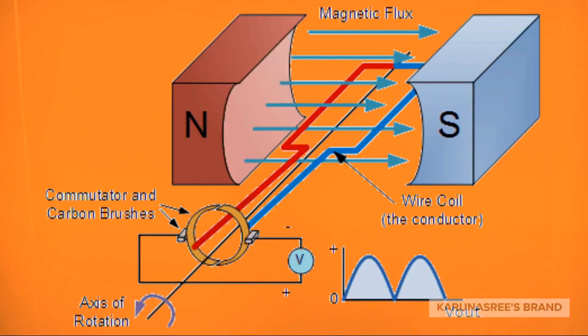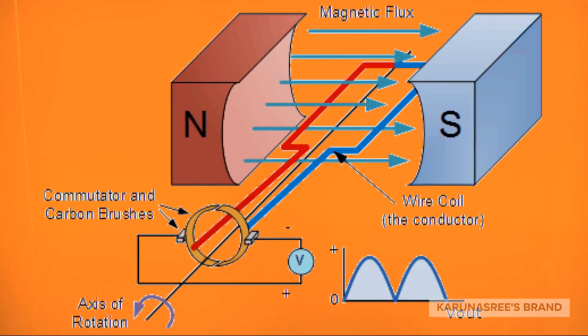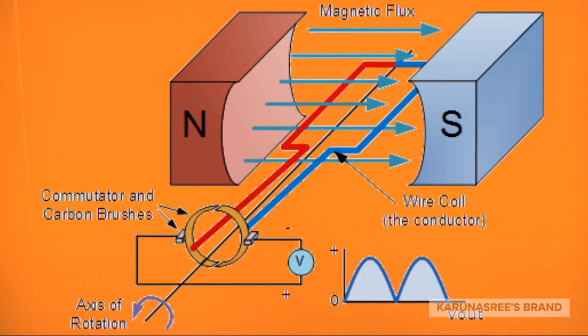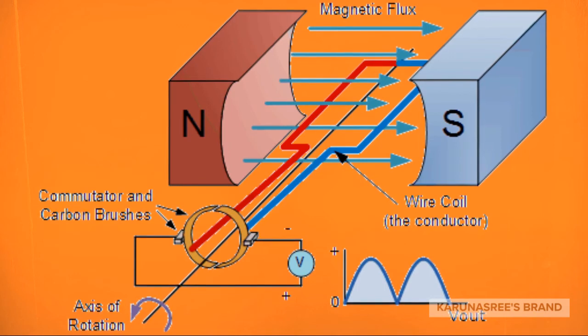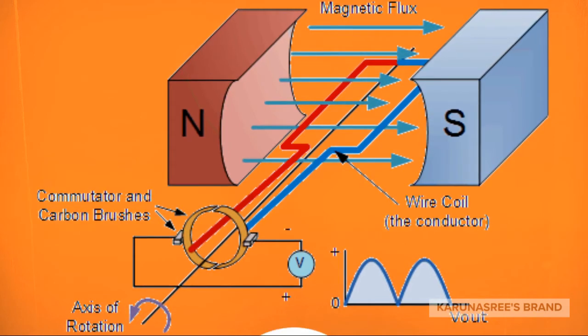This is the DC generator. The DC generator is constructed to flow electricity in one particular direction.